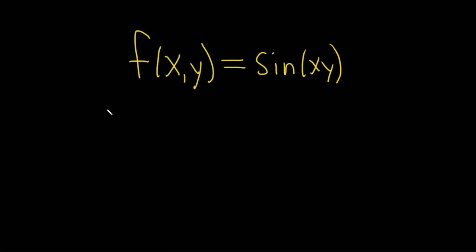Let's start by finding the partial derivative with respect to x. So del f del x. When we're finding the partial derivative with respect to x, we treat all of the other variables as constants. So in this case we're thinking of y as a constant.